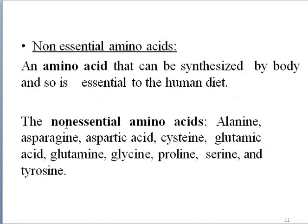Non-essential amino acids can be synthesized by the body and are very essential to human beings. Examples include alanine, asparagine, aspartic acid, cysteine, glutamic acid, and glutamine.